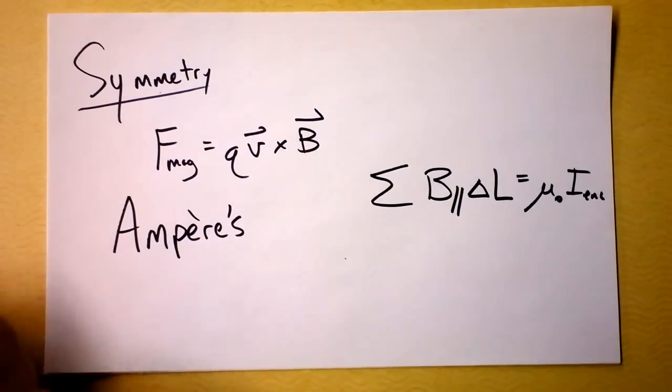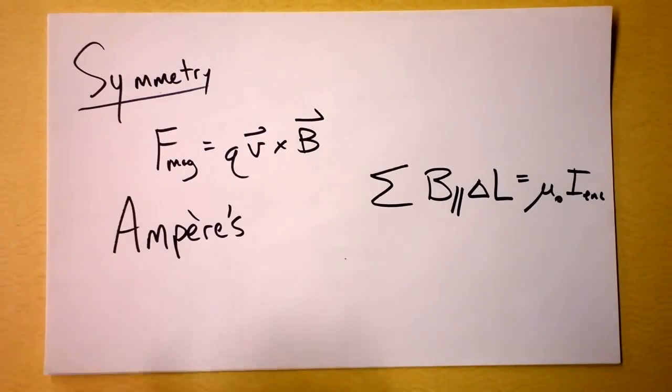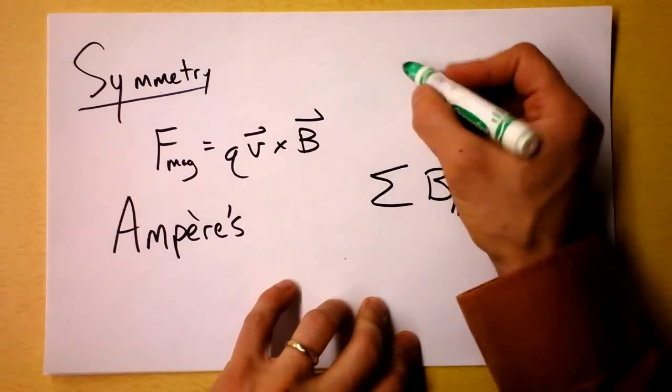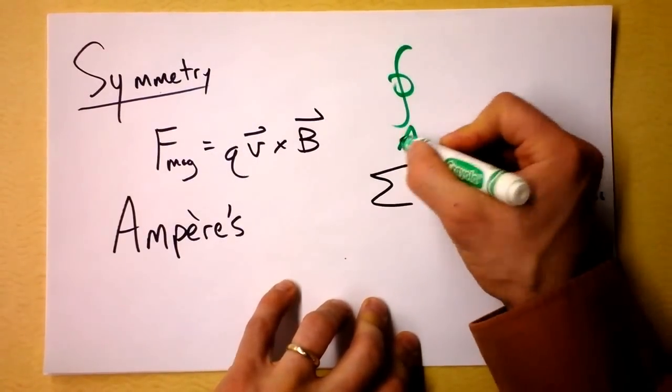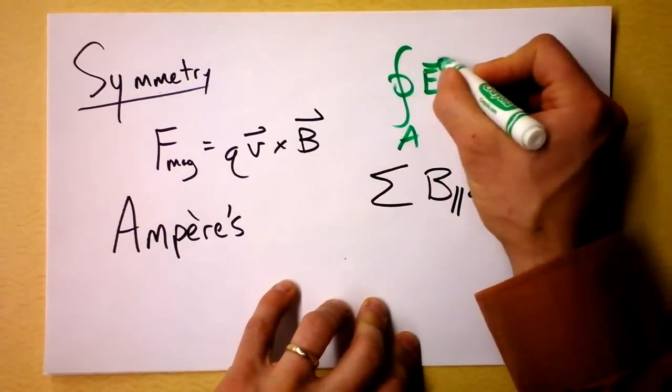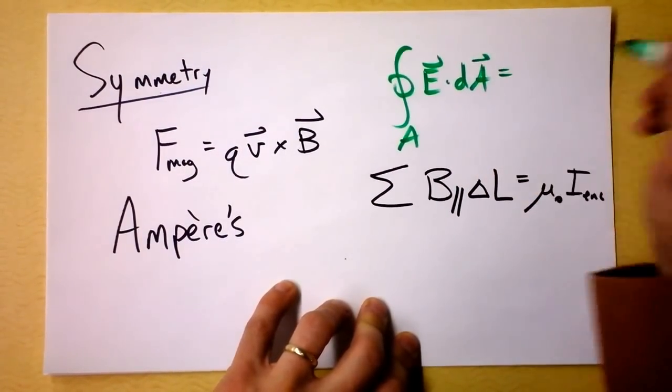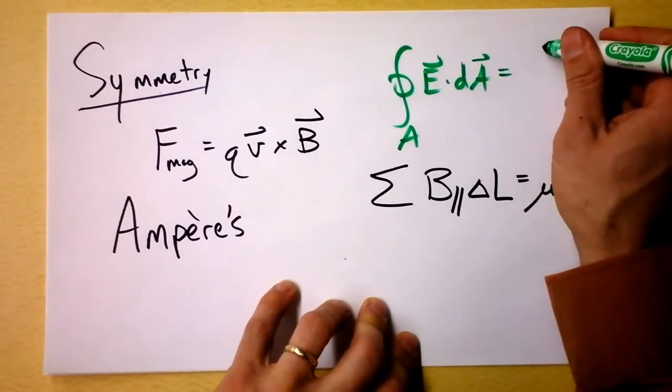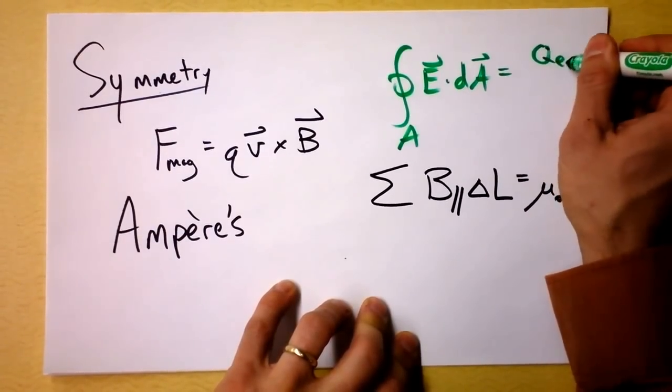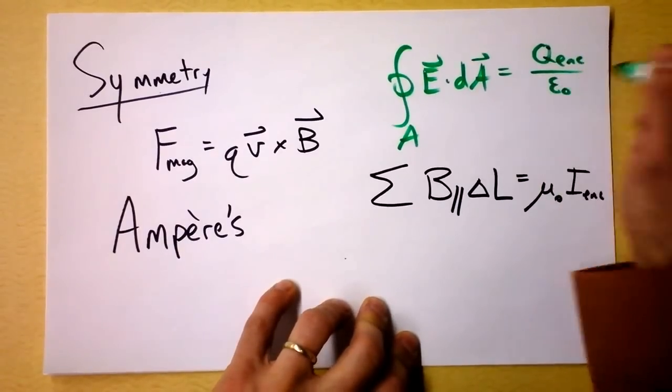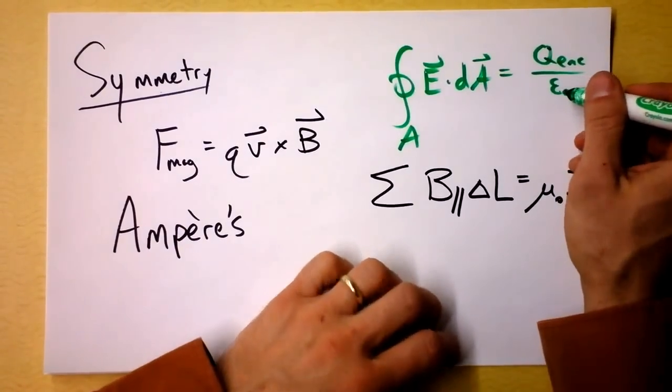This reminds me of another thing that we've seen. This reminds me of, if I take the integral over some area of the electric field dotted into the area, then I will get, what did we get? We got the charge enclosed divided by epsilon naught, a constant of the universe.